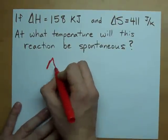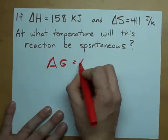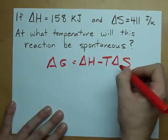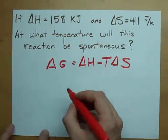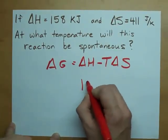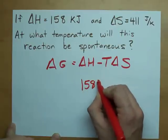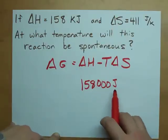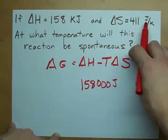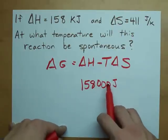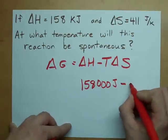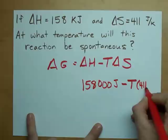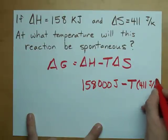Our formula is delta G equals delta H minus T delta S. What do we know? Well, we know delta H is 158 kilojoules. I'm going to convert it to joules, because I noticed this is in joules. That's going to happen more often than not. I don't have my temperature, but I do have my entropy, 411 joules per Kelvin.